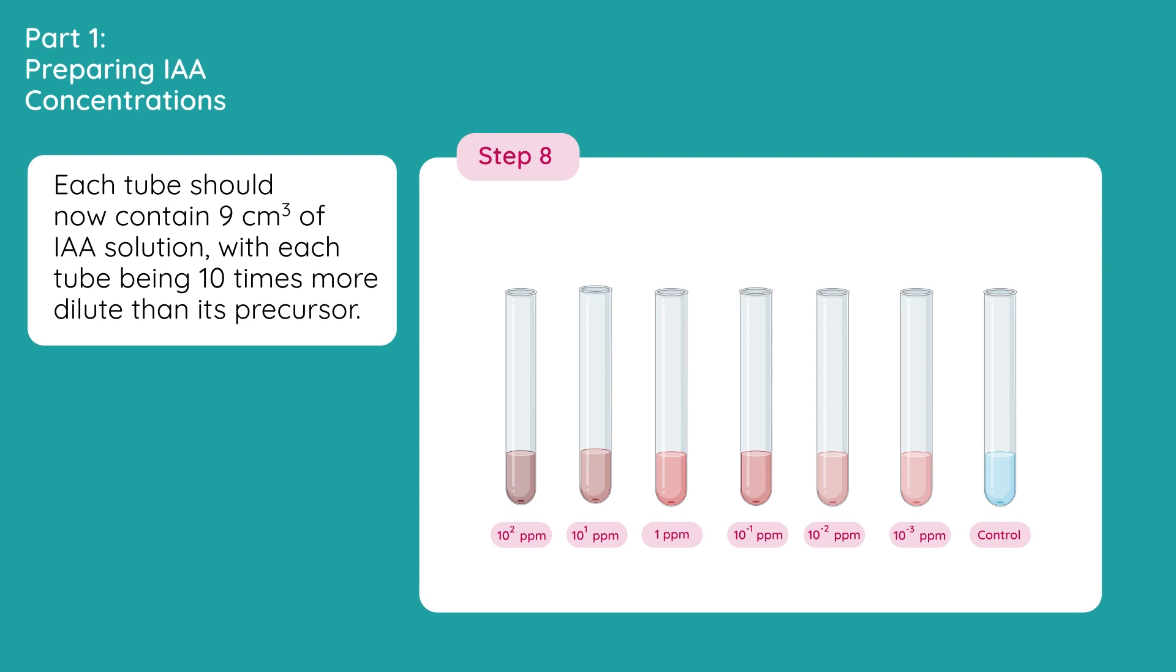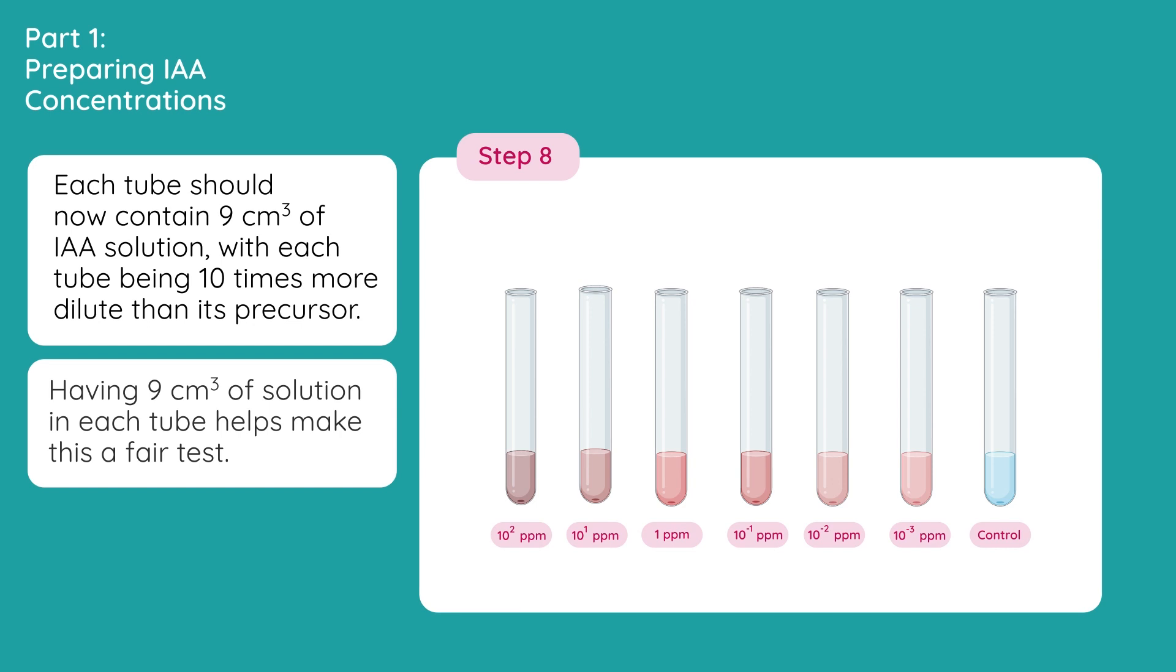Having 9 centimeters cubed of solution in each tube helps to make this a fair test. Fill the 7th tube, or control, with 9 centimeters cubed of distilled water. This is what we are going to compare our experiment to.